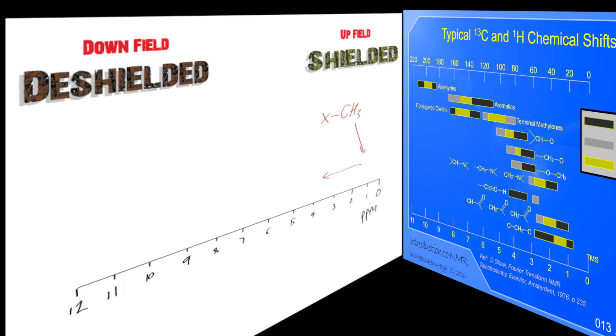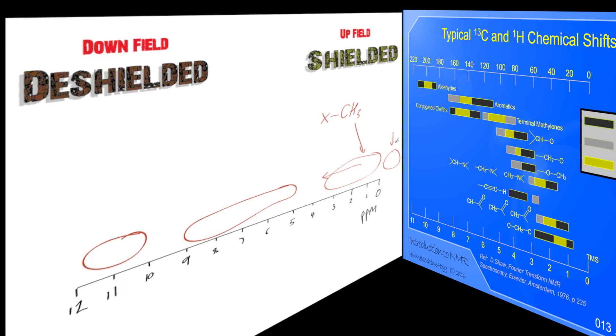So shielded nuclei tend to be around this region, deshielded around this region, really deshielded down there. You can have shielded nuclei around here.